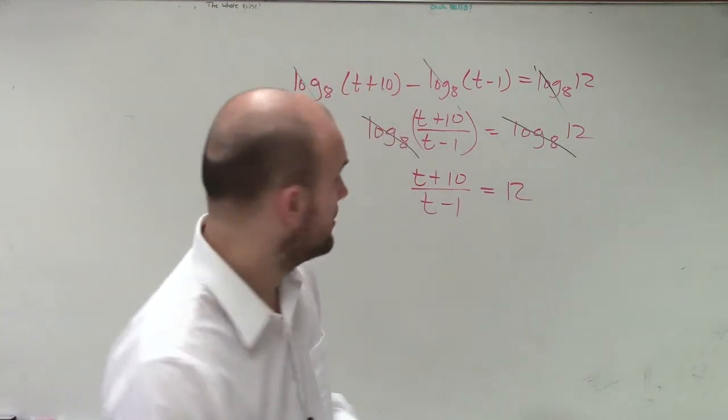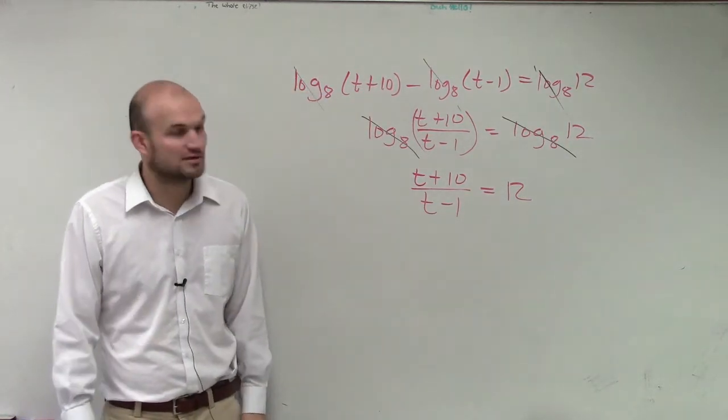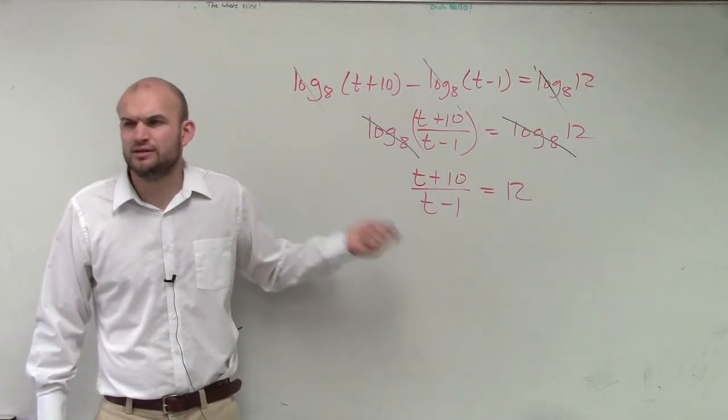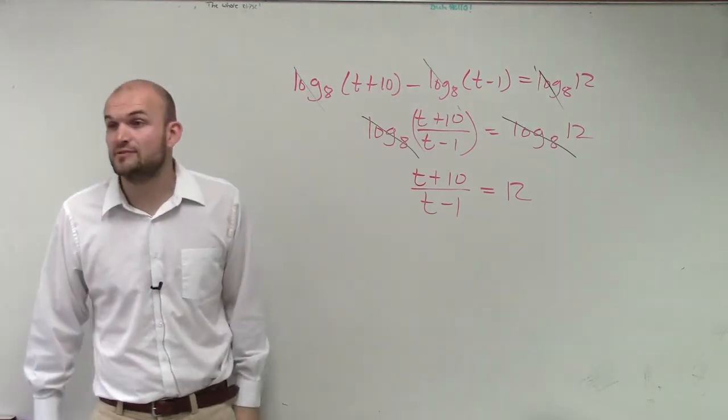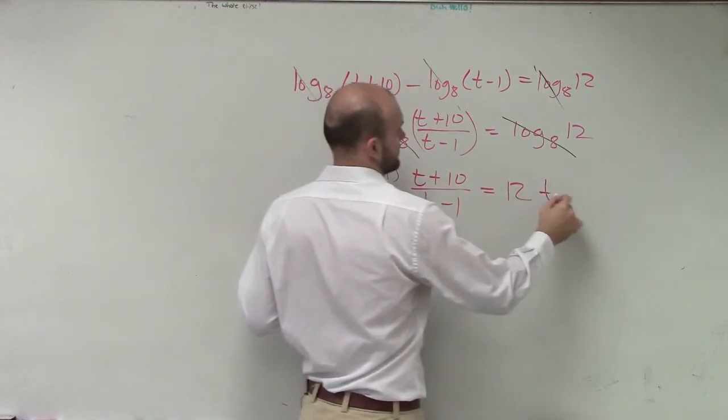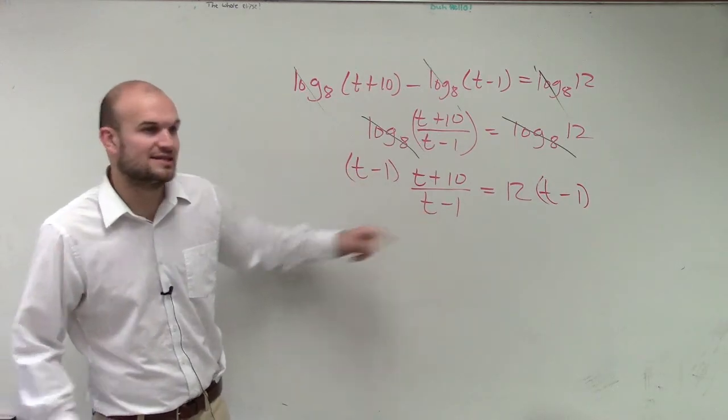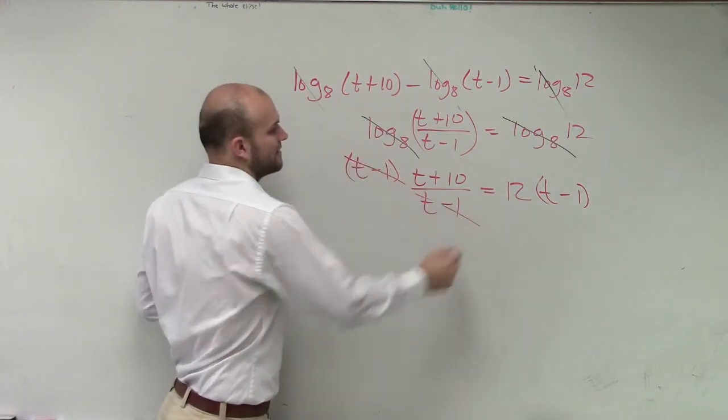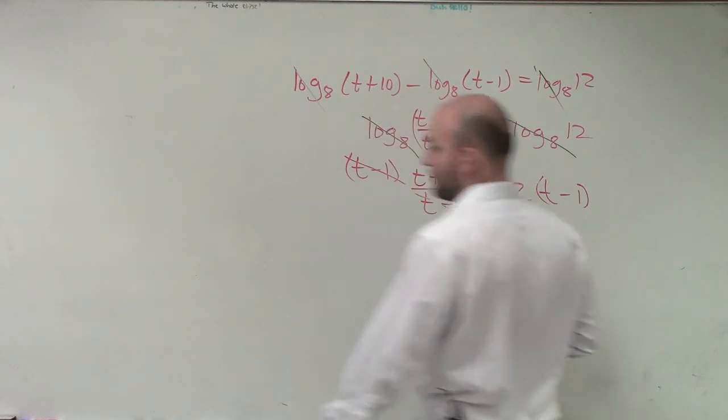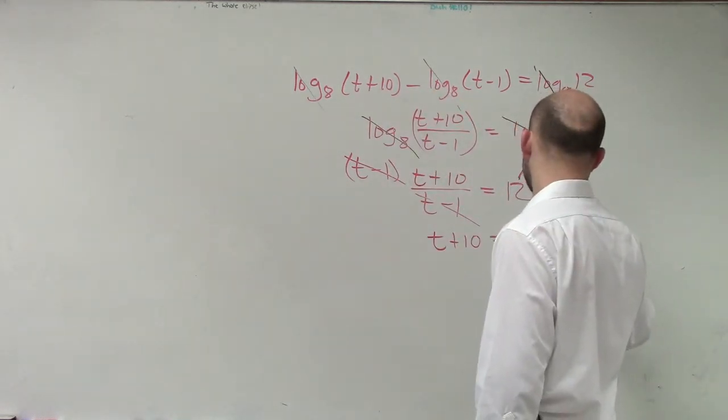To finish this, I need to solve for t. The first thing I've got to do is get t off the bottom, so I'll multiply by (t minus 1). I'm multiplying by (t minus 1) and dividing by (t minus 1), so that cancels to one, leaving t plus 10 equals... now I can apply the distributive property, so I get 12t minus 12.